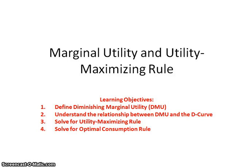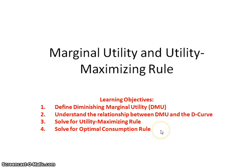In this screencast, we are going to look at marginal utility and the utility maximizing rule. We're going to define diminishing marginal utility, look at the relationship between diminishing marginal utility and the demand curve, and then solve for the utility maximizing rule and the optimal consumption rule.